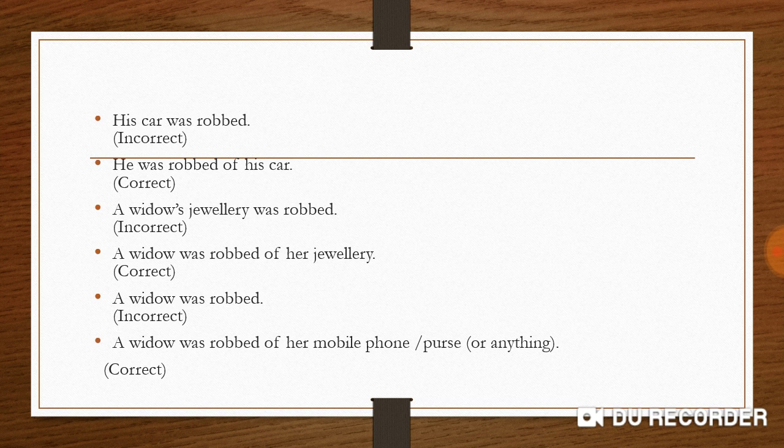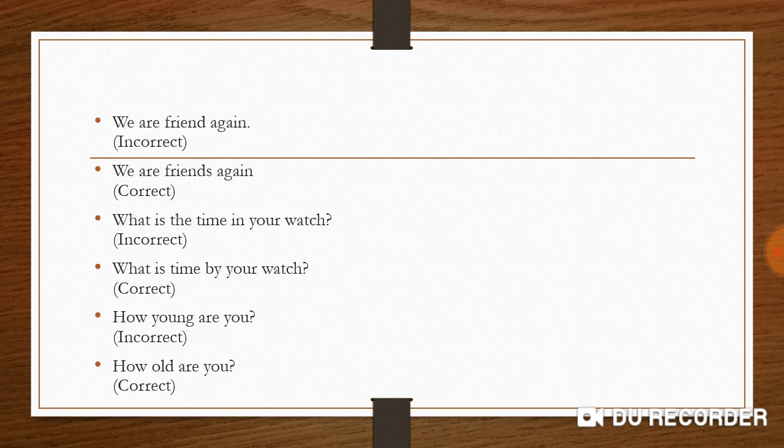Next: 'We are friend again' — incorrect. It should be: 'We are friends again.' Similarly, 'What is the time in your watch?' is completely wrong. The correct form is: 'What is the time by your watch?' — not 'in your watch.'